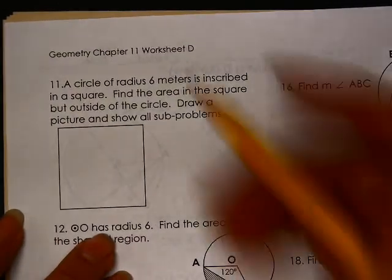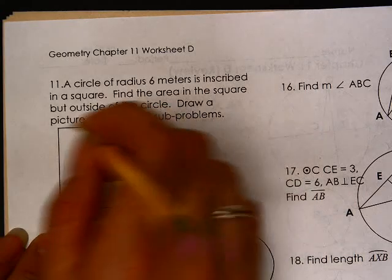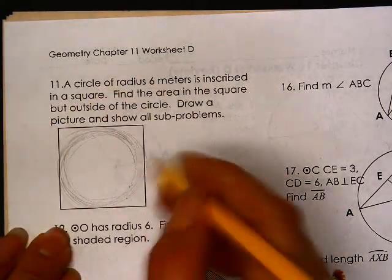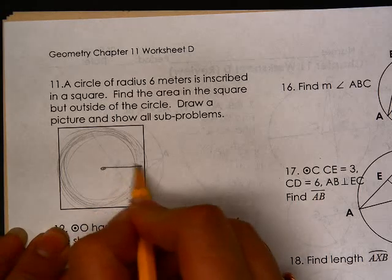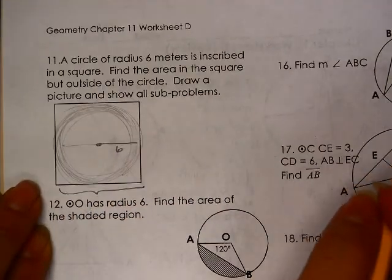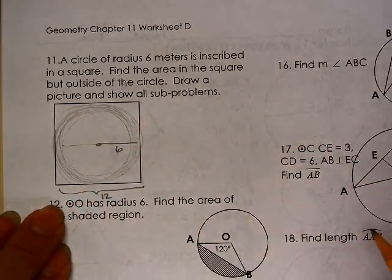All right. Let's do one more, flipping it over, number 11. So I have a circle of radius 6 meters inscribed in a square. So it looks beautifully like that. It has a radius of 6, which means this whole length is 12. Hopefully that's what you chose.